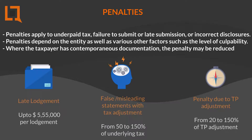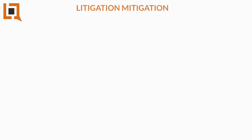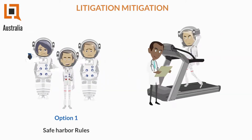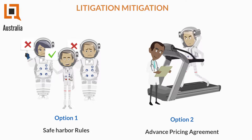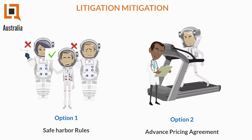Transfer pricing non-compliance comes with very hefty penalties. To mitigate any transfer pricing risk, companies have an option to enter into an advanced pricing agreement with the tax authorities, or may choose safe harbor rules.